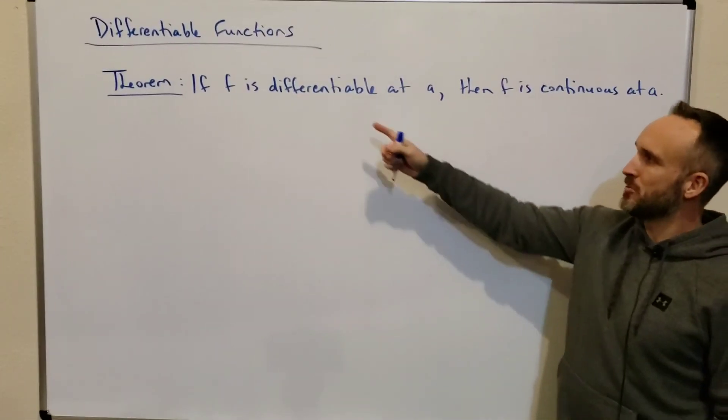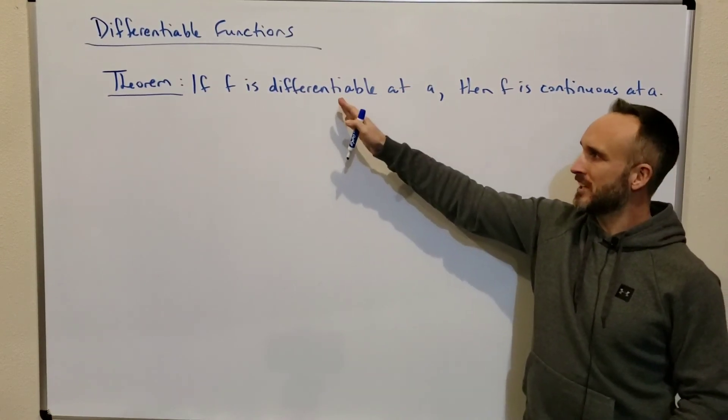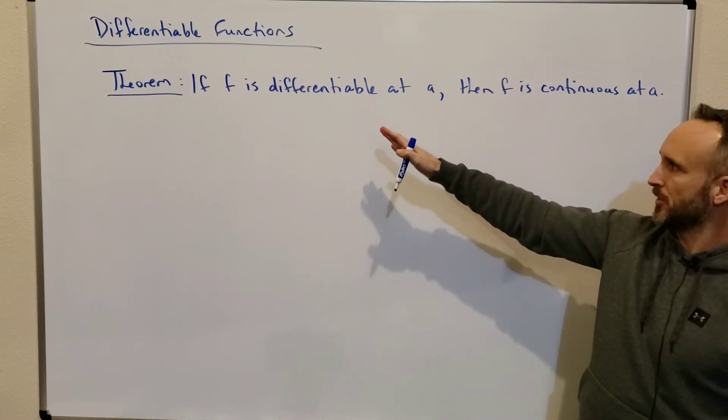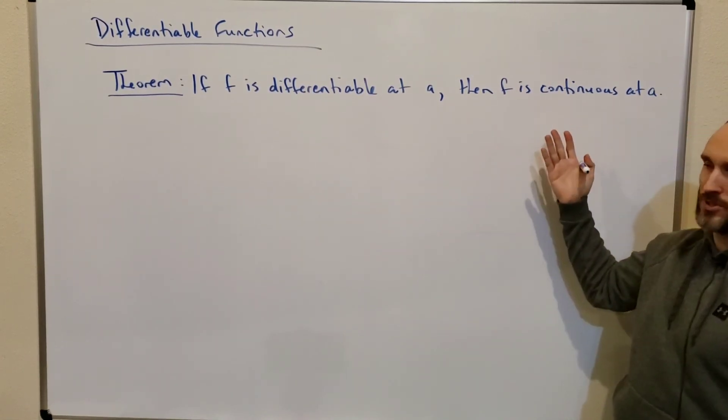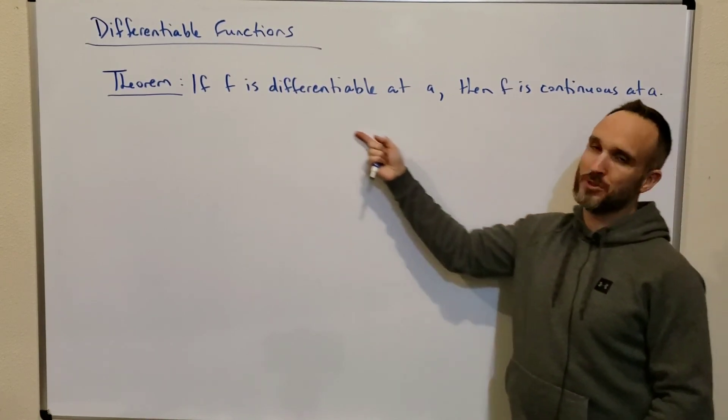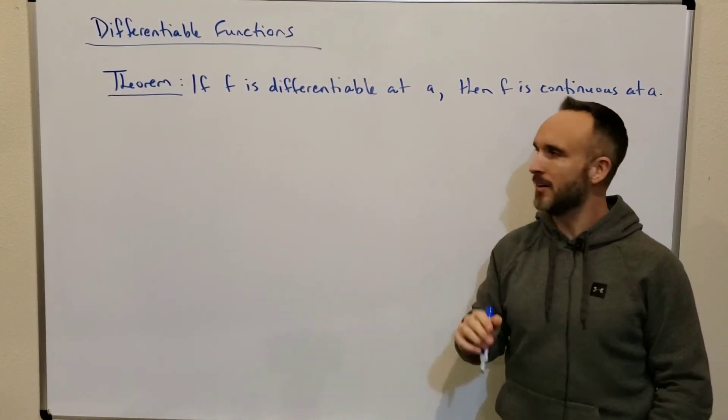So, differentiability is a sufficient condition for continuity. If f is differentiable there, it has to be continuous there. But, it's not always true that if a function is continuous, it is also differentiable. So, that's not enough, okay?